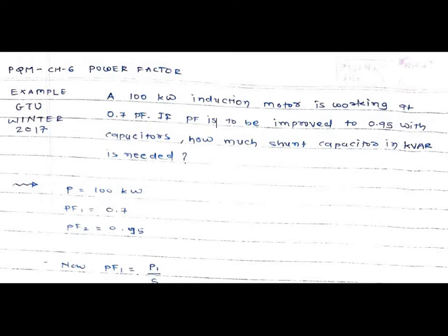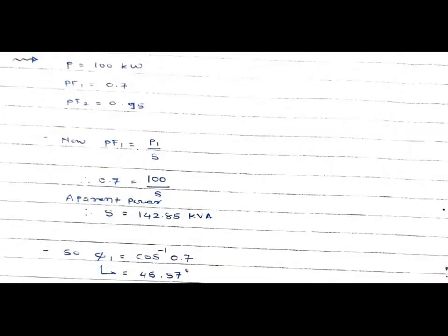One induction motor with rating 100 kilowatt is given and its power factor is 0.7. We have to improve the power factor to 0.95 from 0.7. We need to find the reactive power in terms of KVAR required for improving the power factor from 0.7 to 0.95. Given data: P is equal to 100 kilowatt.